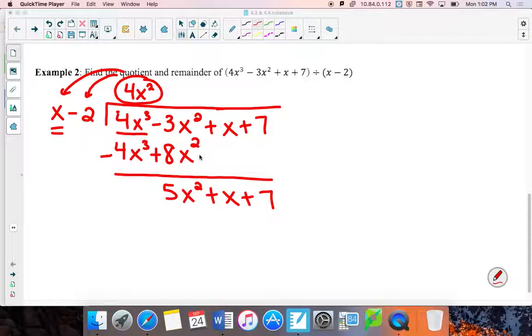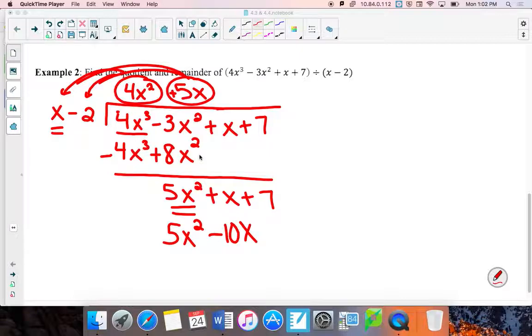Start the process over. This x on the outside times something has to give me a 5x squared. That's going to be a positive 5x. Now multiply him to both guys. 5x squared minus 10x. Draw the line, change the signs. 5x squared minus 5x squared. Bye-bye. x plus 10x, 11x. Bring down whatever's remaining.